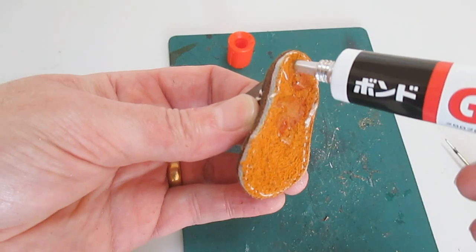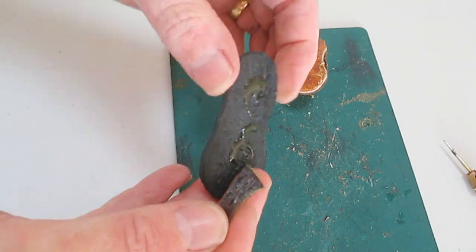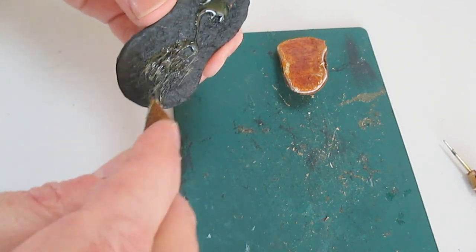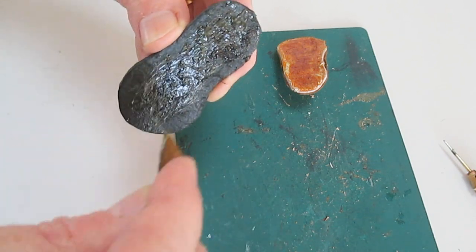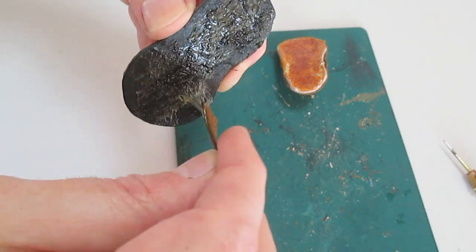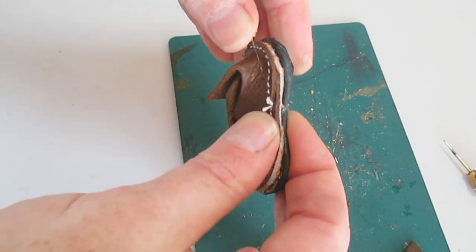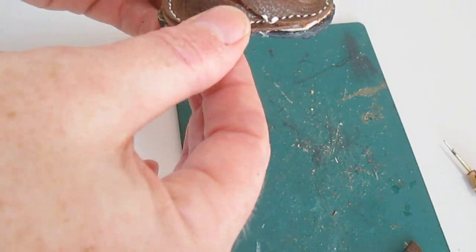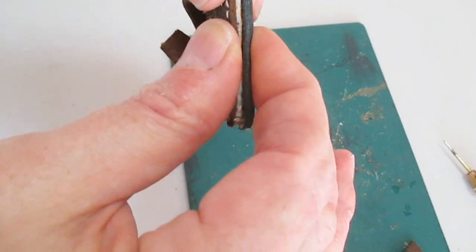Next, I apply contact cement to the sole of the shoe, and then firmly attach that piece. Then leave it for a while for the glue to set up.